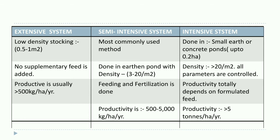In the extensive system, stocking density is low and no supplementary feed is added. Production is usually less than 500 kg per hectare per year.